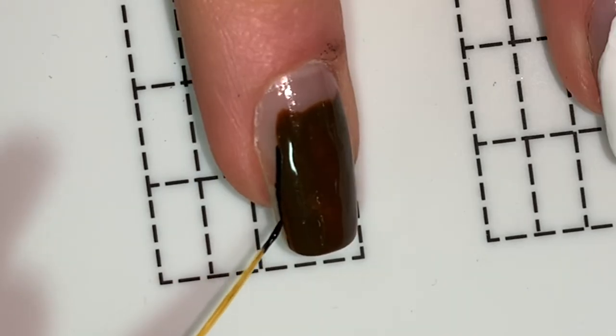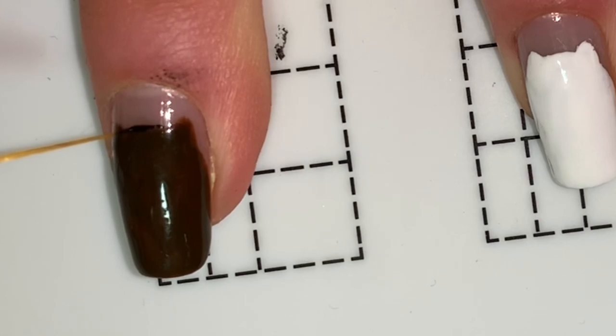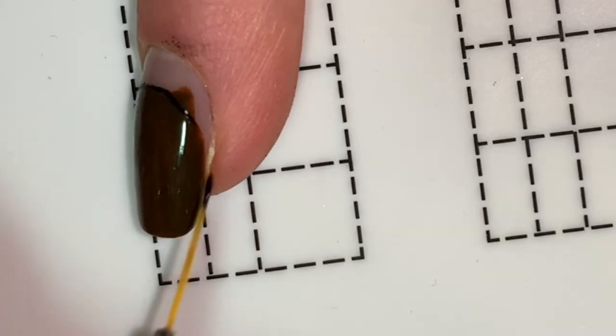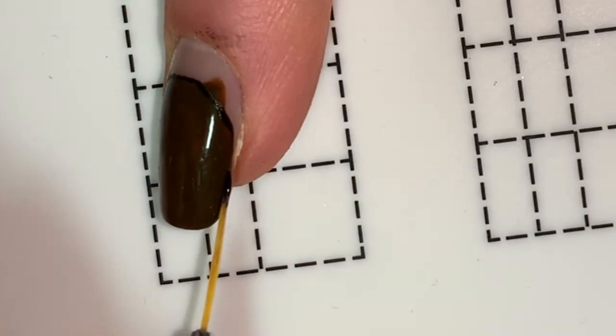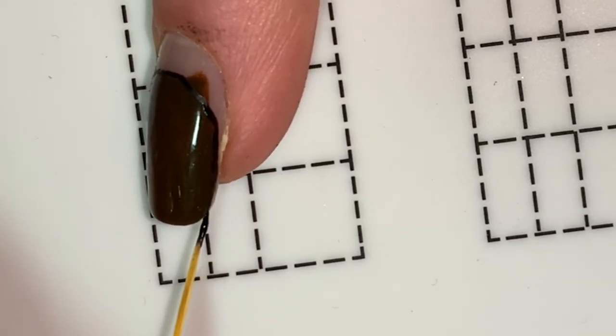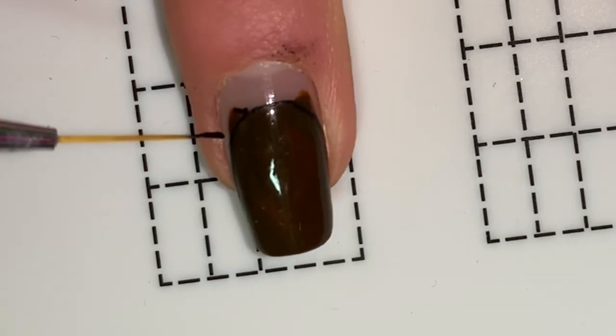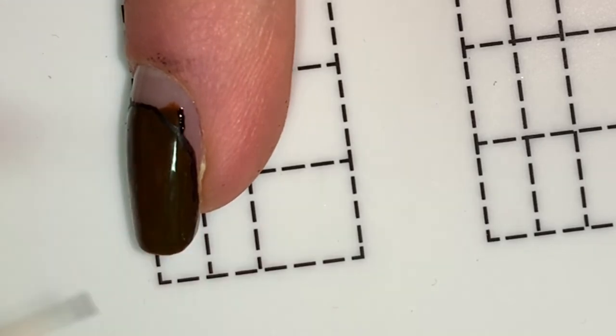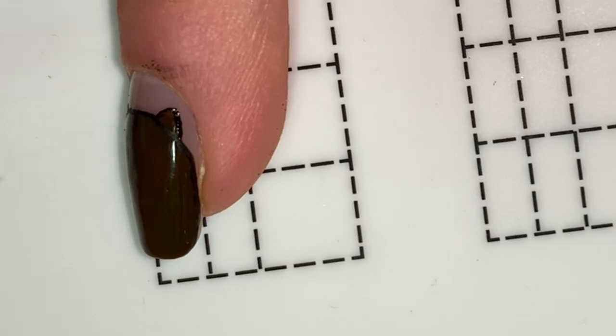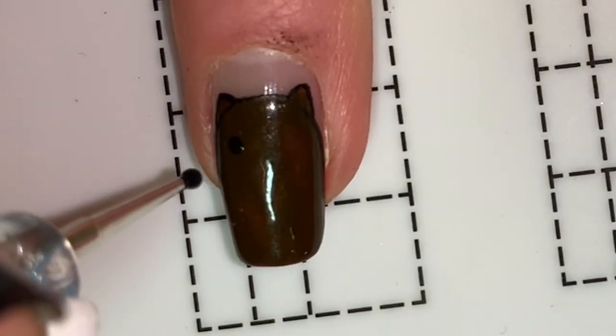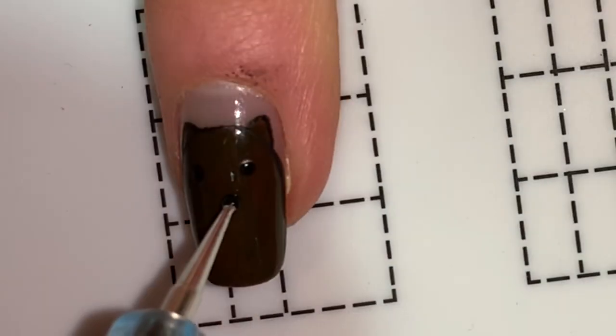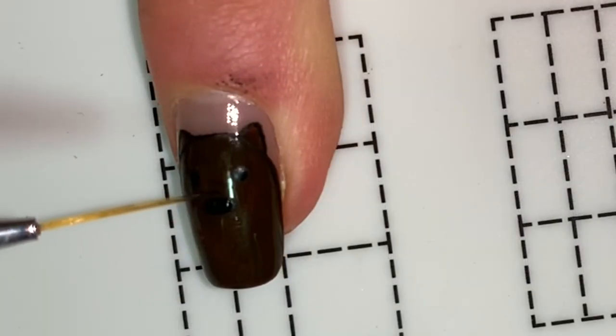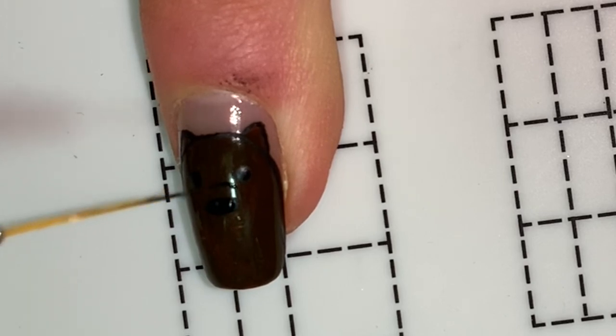For my middle nail, I'm starting off the same way as on my other nail. Even though it's hard to see, I'm starting with a black outline. Next, I'm doing one dot for each eye. It was so difficult to tell if the eyes were in the right place because I couldn't see. Then I'm doing the same thing for the nose. With my detail brush again, I'm going to do a line above the nose and next to it for the snout.